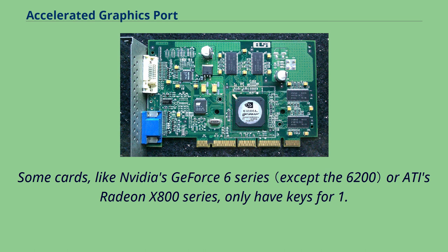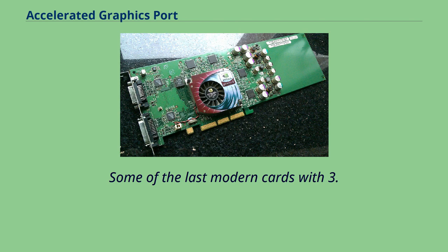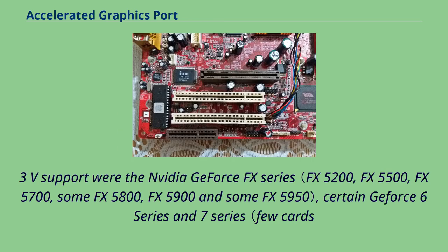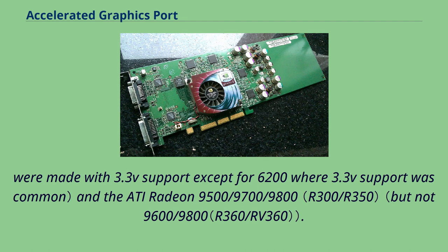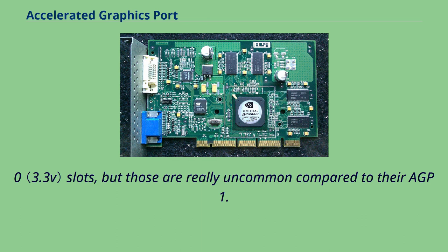Some cards, like NVIDIA's GeForce 6 Series or ATI's Radeon X800 Series, only have keys for 1.5V to prevent them from being installed in older mainboards without 1.5V support. Some of the last modern cards with 3.3V support were the NVIDIA GeForce FX Series, certain GeForce 6 Series and 7 Series. Few cards were made with 3.3V support except for the 6200, where 3.3V support was common, and the ATI Radeon 9500/9700/9800. Some GeForce 6200/6600/6800 and GeForce 7300/7600/7800/7900/7950 cards will function with AGP 1.0 slots, but those are really uncommon compared to their AGP 1.5V-only versions.